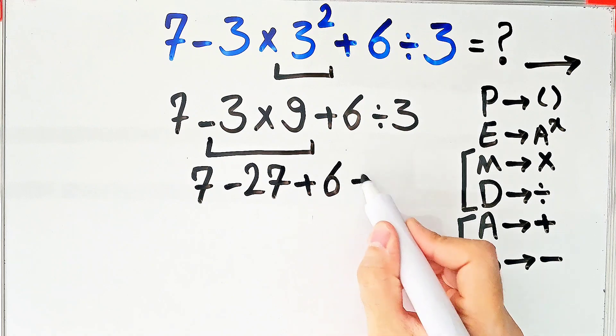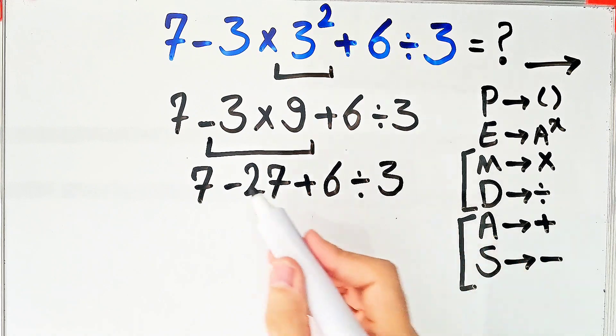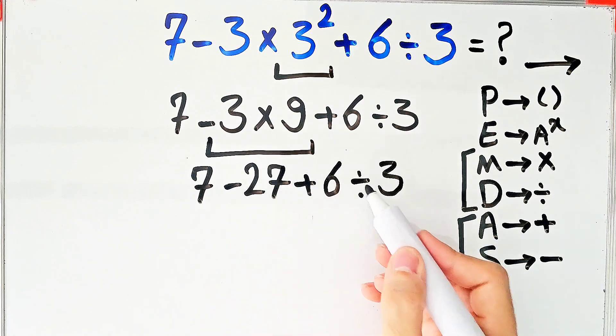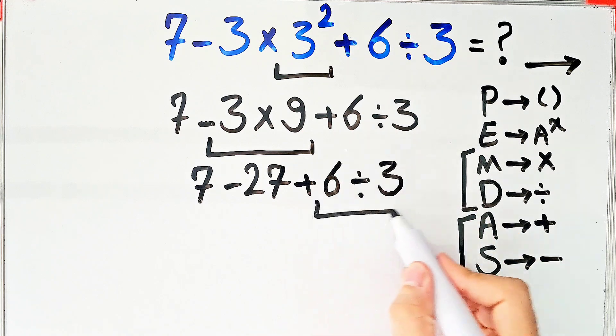We have subtraction, addition, and division. First we do this division. Six divided by three equals two. Now we have seven minus twenty-seven then plus two.